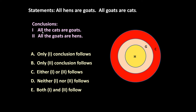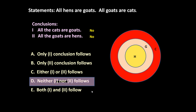Now let us check the conclusions. First: 'All cats are gods' — no, it doesn't follow, because only some of the cats are gods. Second conclusion: 'All gods are hands' — no, it also doesn't follow. So the correct option is neither conclusion one nor conclusion two follows.